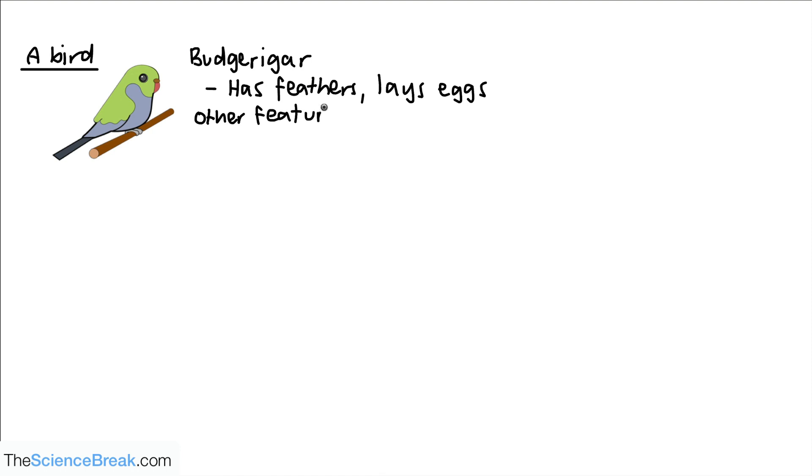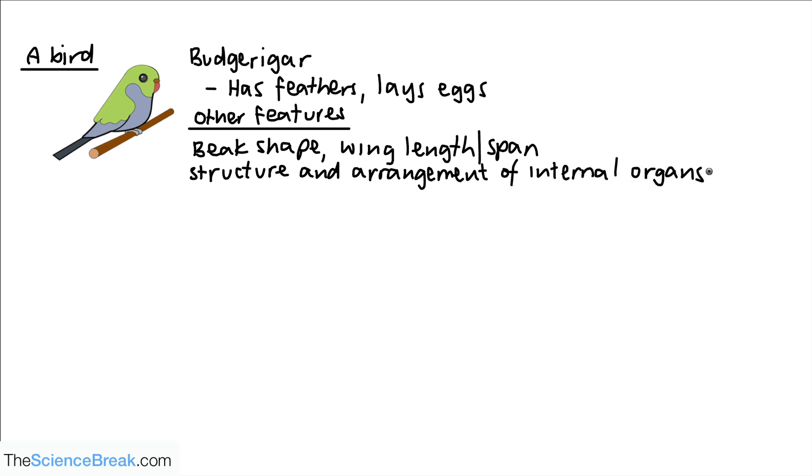However, it does have other features as well. Features that are specific to this species might be the beak shape or the wing length, the wing span, and other features. We can also look at the structure and arrangement of internal organs. We can also look at other things like courtship behaviour. This is how these birds would attract mates. This is specific to the species as well.